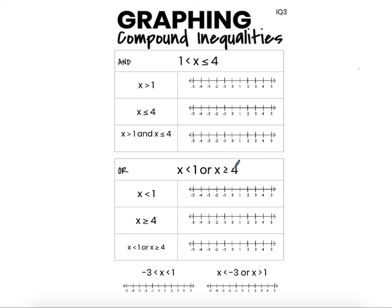The numbers 5, 6, 10, 1,000, and 4 are greater than or equal to 4 but not less than 1, and all of those numbers would be solutions to this compound inequality because to be in the solution set the number needs to either be less than 1 or greater than or equal to 4, and not both.